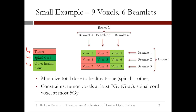We have two beams that are each split into three beamlets. Beam one is composed of beamlets one, two, and three, and comes in from the right. Beam two is composed of beamlets four, five, and six, and comes in from the top.